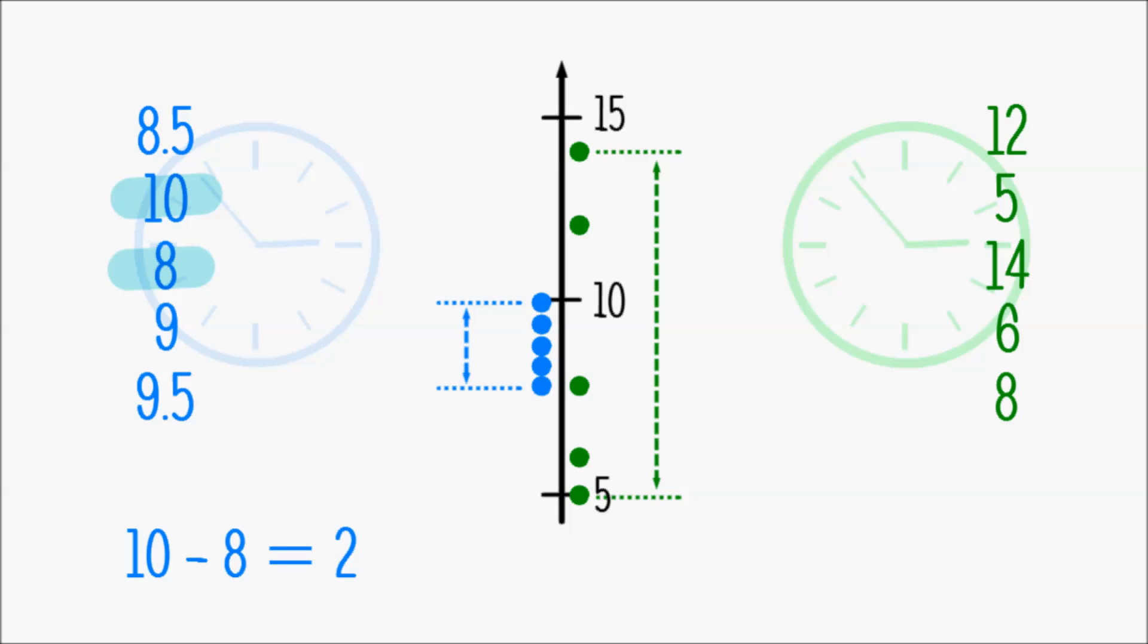and in the case of Anna, it is 14 minus 5, i.e. 9. And from that we can tell, there is more variability in Anna's working hours than there is in Patrick's.